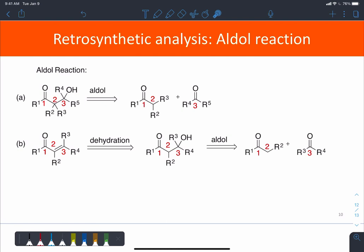Similarly, if we had seen this 1-3 product in the alpha-beta unsaturated ketone, that also could have come from an aldol product that in turn had come from two different carbonyls.